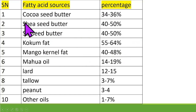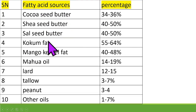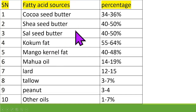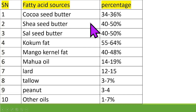Stearic Acid-containing fats such as Shea Seed, Sal Seed, Cocoa Fat, and Mango Kernel are used in chocolate manufacturing, making them most important. These are Cocoa Butter Substitutes or Cocoa Butter Equivalents, and they are used in the manufacturing of chocolates.